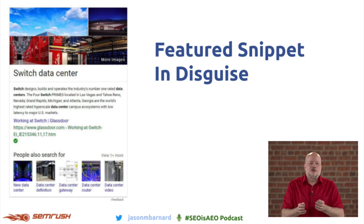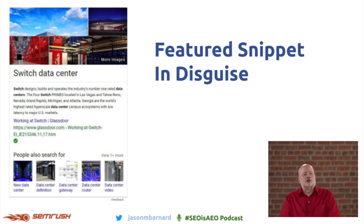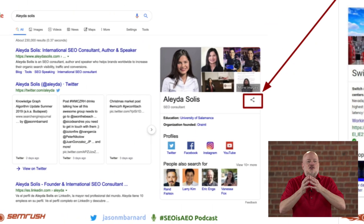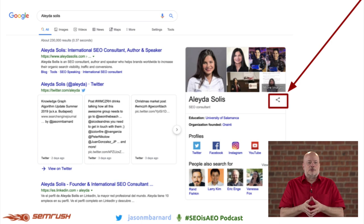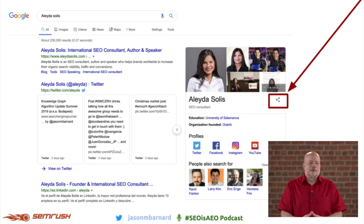Watch out for Featured Snippets that are disguised as Knowledge Panels. Sometimes on the right you get a Featured Snippet and it looks like a Knowledge Panel, but it isn't. The sharing symbol is what indicates that it's a Knowledge Panel and not a Featured Snippet.